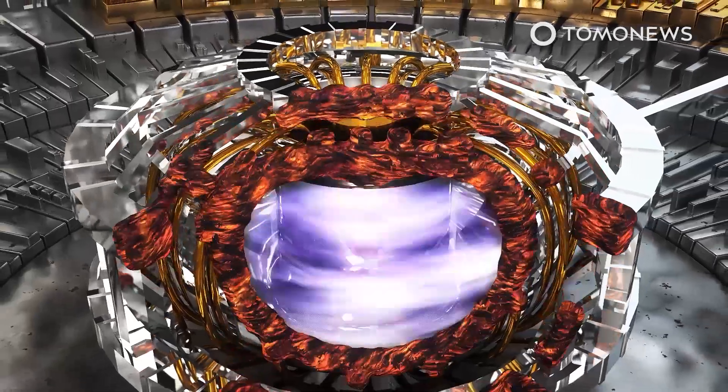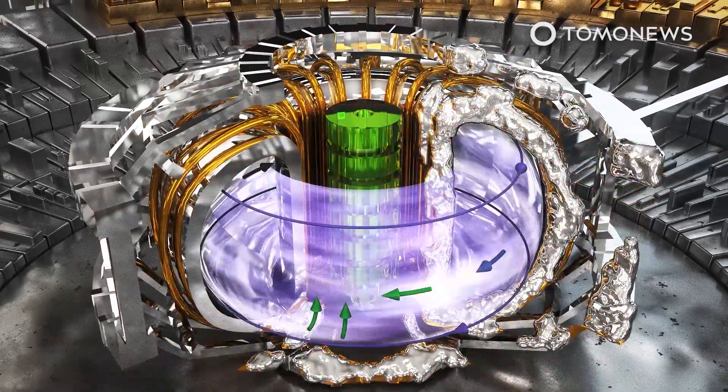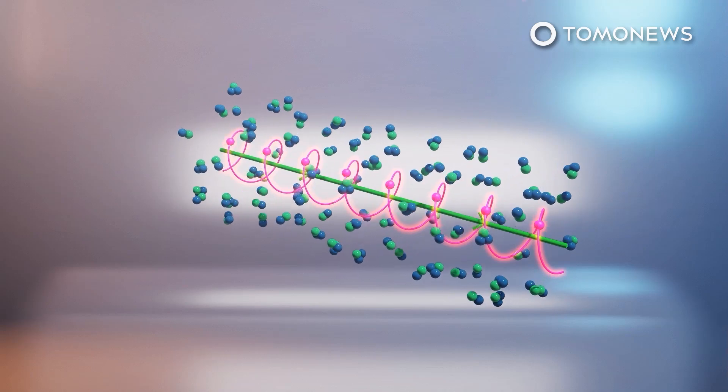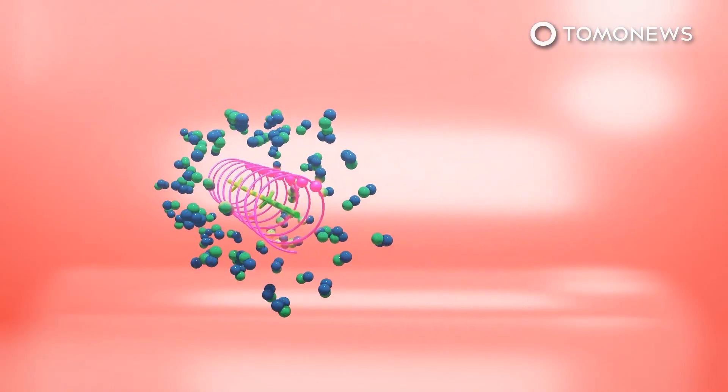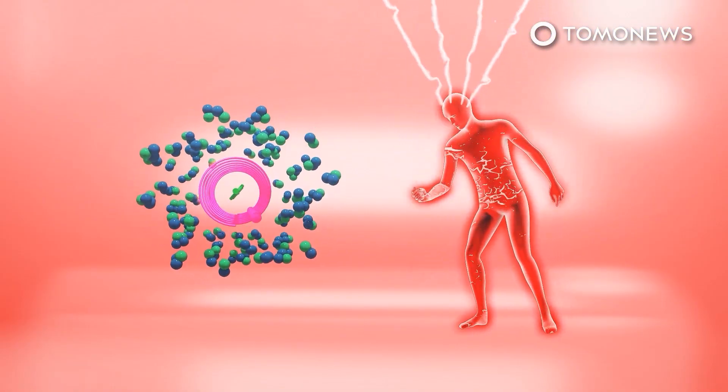One solution to the first problem is trapping superheated gas or plasma inside a donut-shaped magnetic field, and in this area, China's Tokamak fusion reactor has just made a major breakthrough.